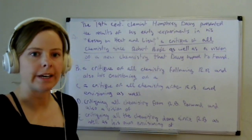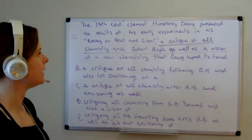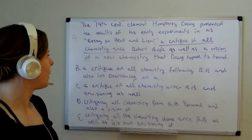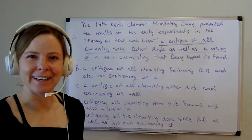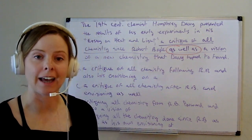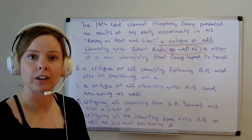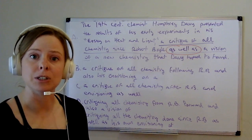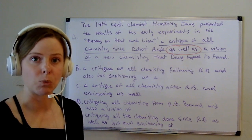All right, let's go through it. Starting with reading A as a whole: 'The 19th century chemist Humphrey Davy presented the results of his early experiments in his essay on heat and light, a critique of all chemistry since Robert Boyle, as well as a vision of a new chemistry that Davy hoped to found.' We don't have the word 'and' or 'or' here, but if you're looking carefully, you have the words 'as well as' — basically functioning as a synonym of 'and.' So you don't want to turn your brain off. If you're thinking logic and function, you'll see this fulfills the same role as 'and,' even if there are small differences in meaning.